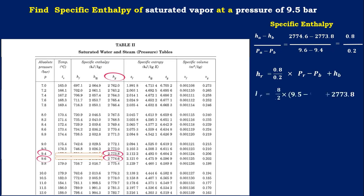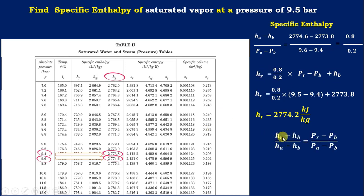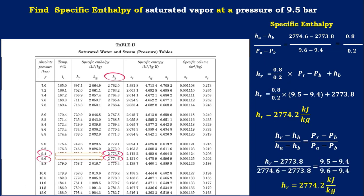Add this to the before value, and the answer is 2774.2 kJ/kg. The general interpolation equation is: (H_required − H_before) / (H_after − H_before) = (P_required − P_before) / (P_after − P_before). Substituting, we get the same answer: HR = 2774.2 kJ/kg. Remember this equation — required minus before, divided by after minus before, applied to both sides.